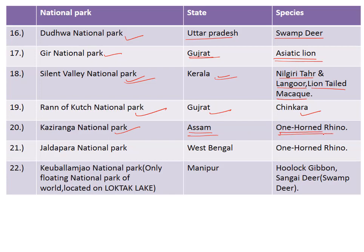Kaziranga National Park is in the state of Assam and is famous for the one-horned rhinoceros. Jaldapara National Park is situated in West Bengal and is also famous for the one-horned rhino. Last but not least is Keibul Lamjao National Park — the only floating national park in the world — located in Loktak Lake in the state of Manipur.